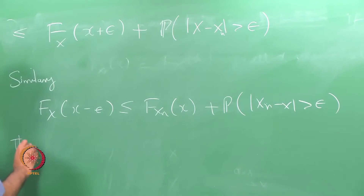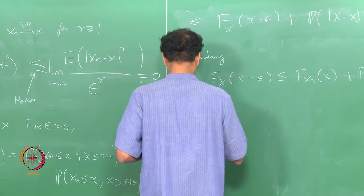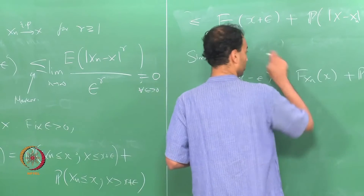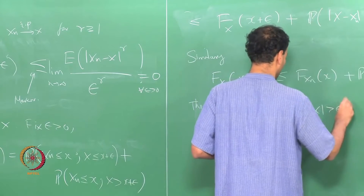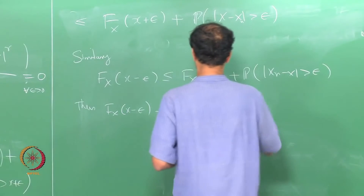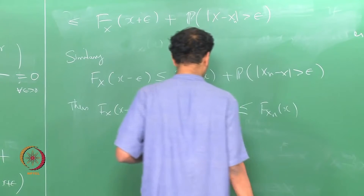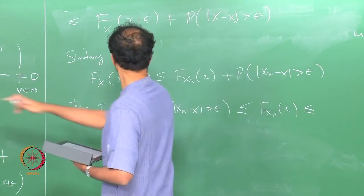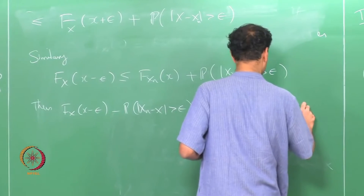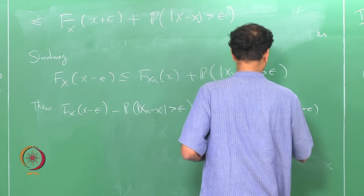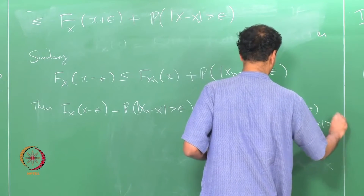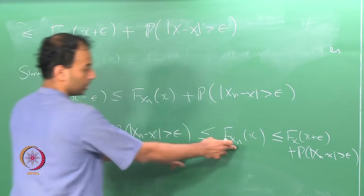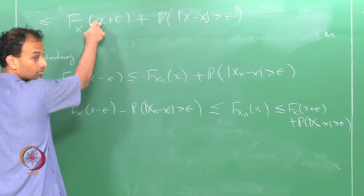If you combine these two, you get: F_X(X minus epsilon) minus P(|X_n - X| > epsilon) ≤ F_{X_n}(X) ≤ F_X(X plus epsilon) plus P(|X_n - X| > epsilon). This is just algebra — bringing the first inequality term here and the second inequality derived there.